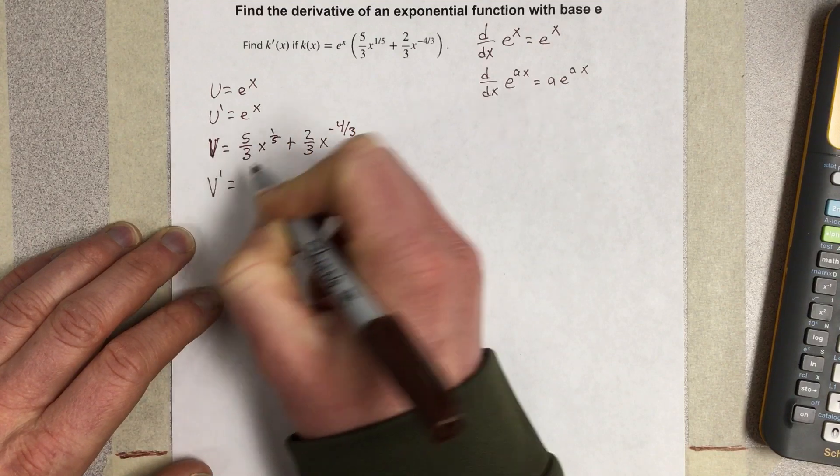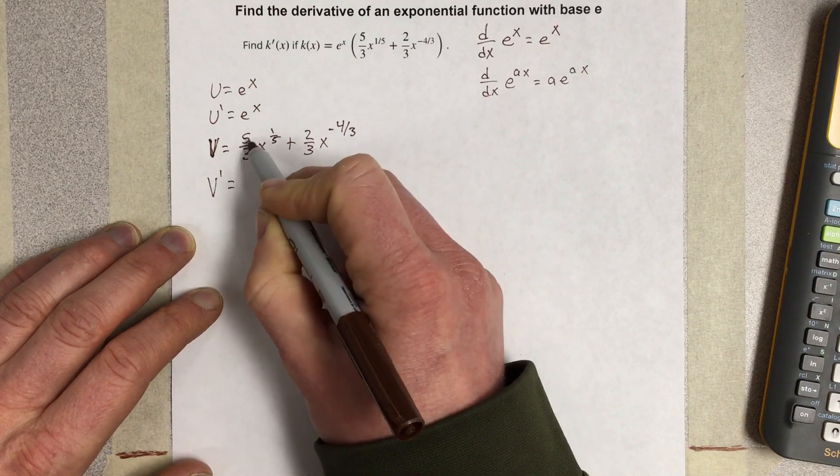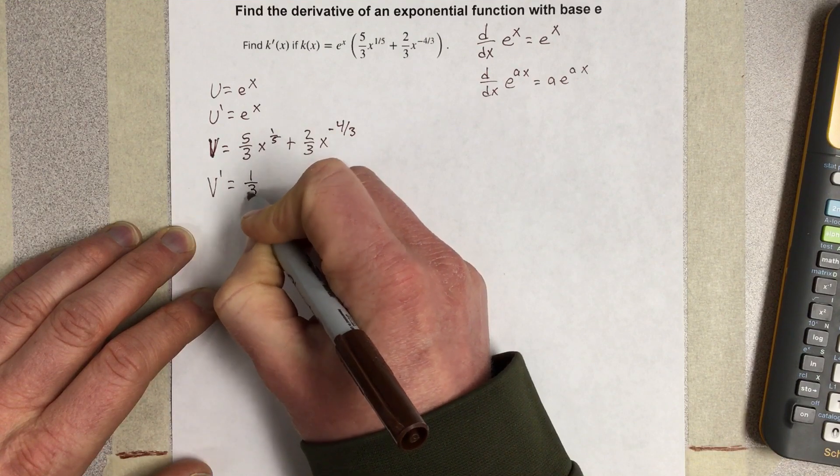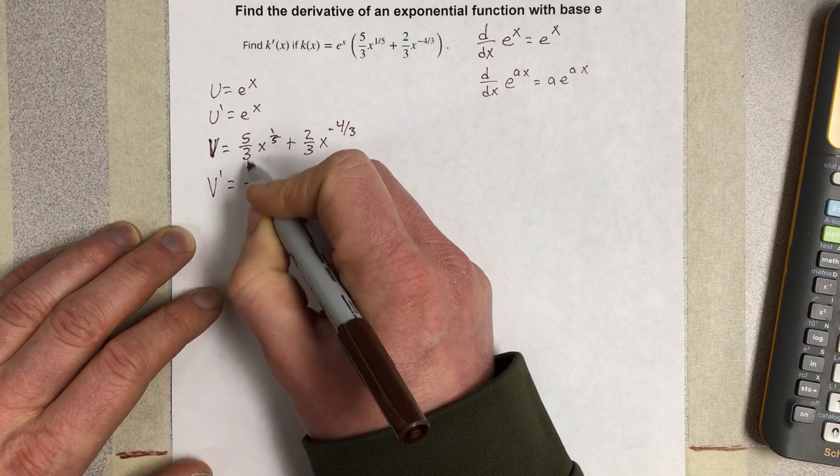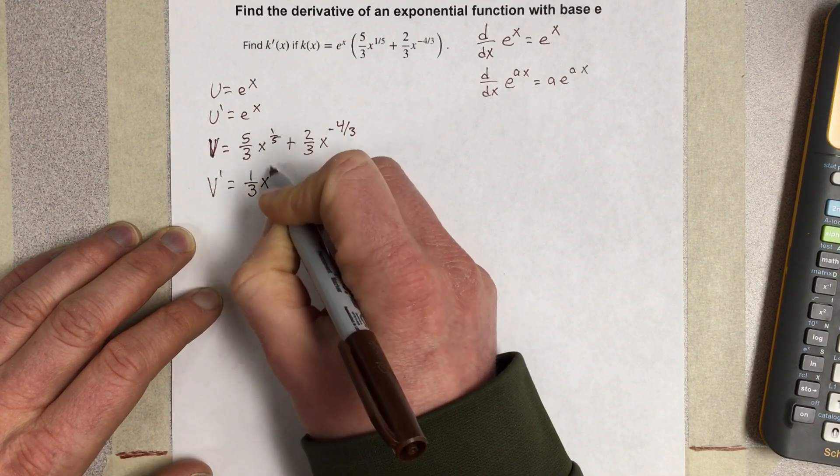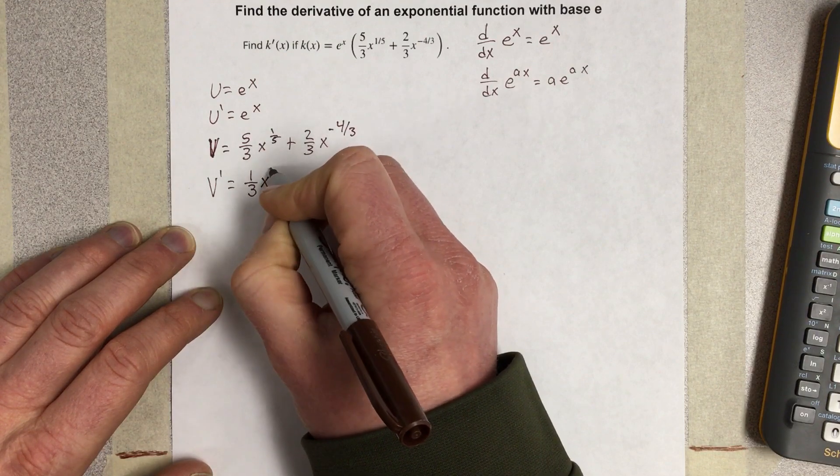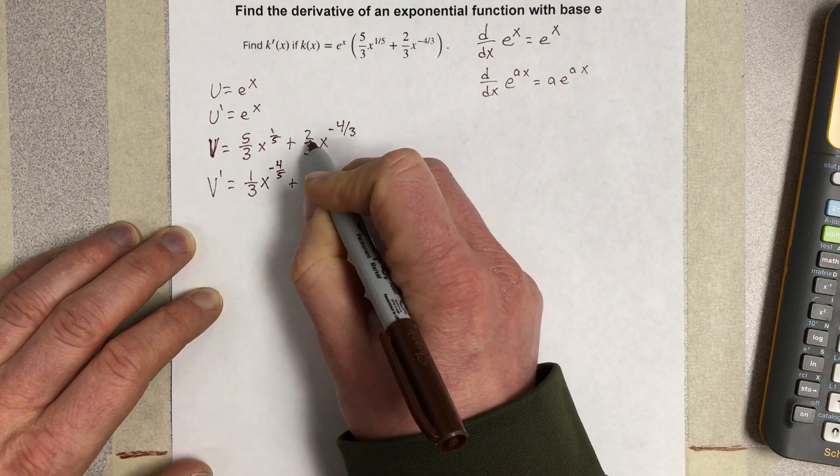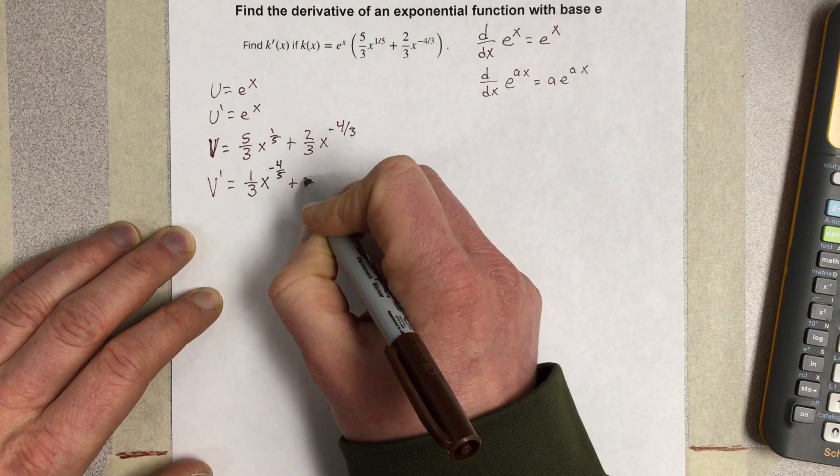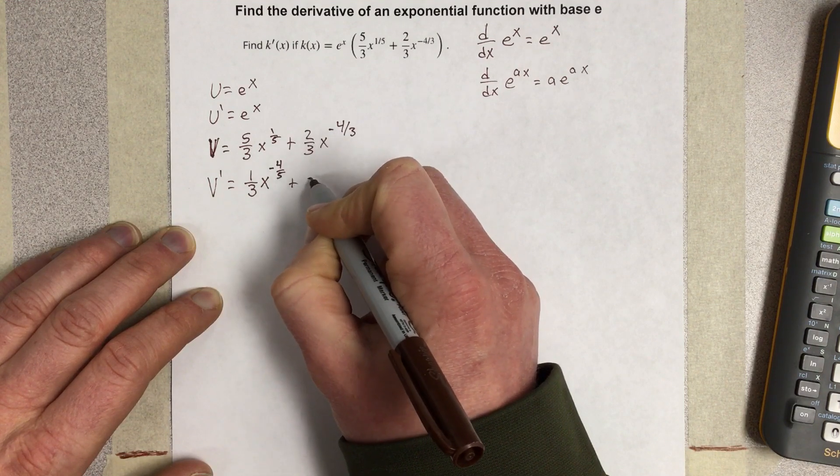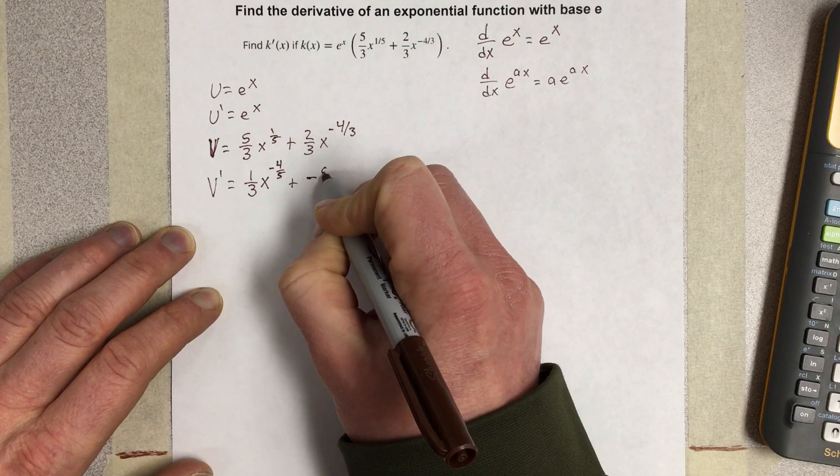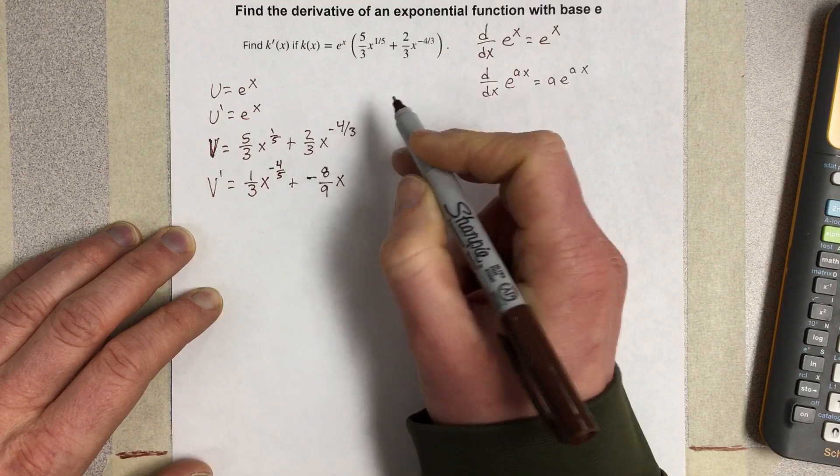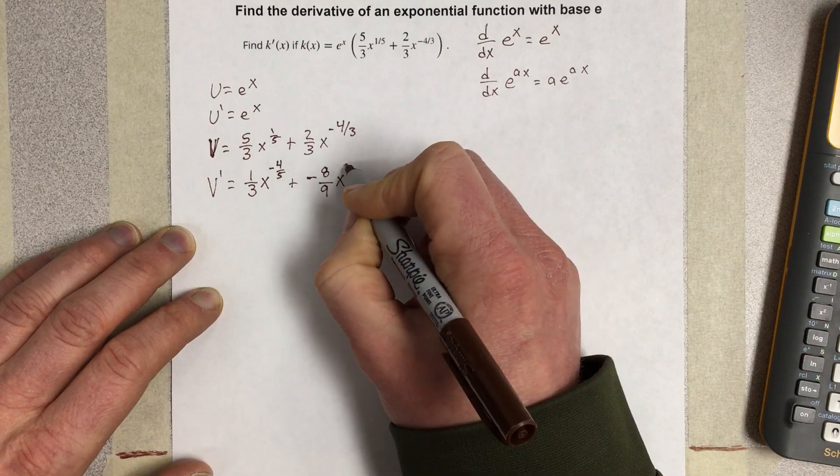So v prime is going to equal one fifth moved to the front times five thirds, that ends up being one third x to the negative four fifths. Plus negative four thirds comes to the front, we'll write negative eight over nine x to the negative seven thirds.